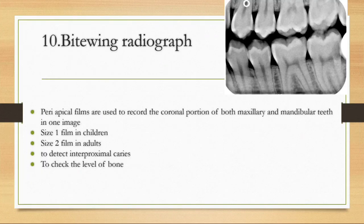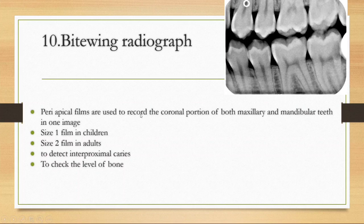The bitewing radiograph records the coronal portion of both maxillary and mandibular teeth in one image, primarily used to identify interdental caries. Size one film is used for children and size two film is used for adults. Bitewing radiographs can also be used to check the level of bone.